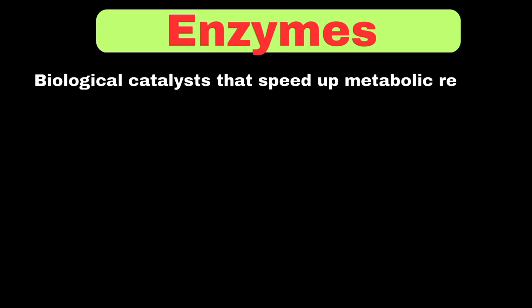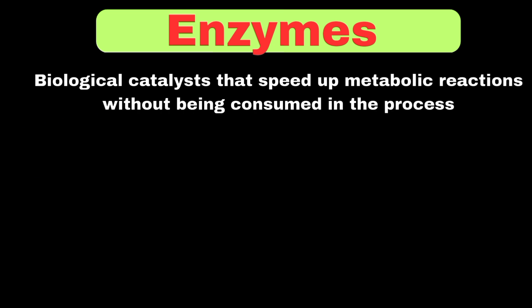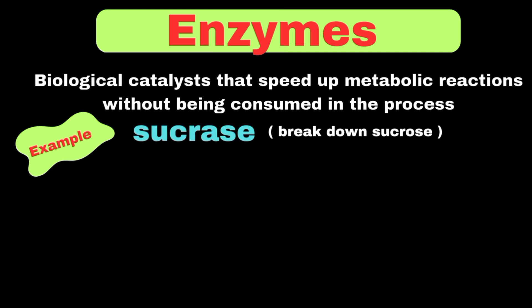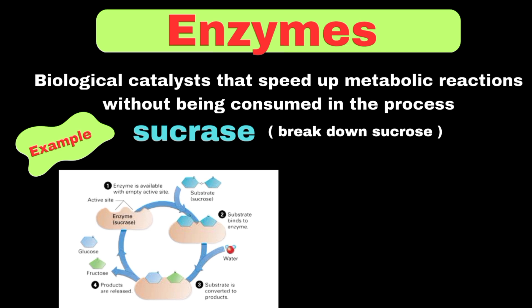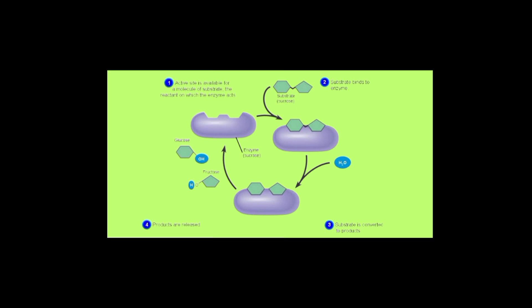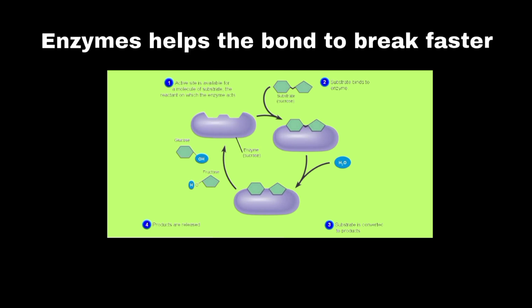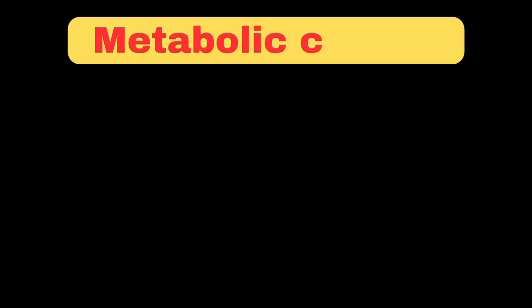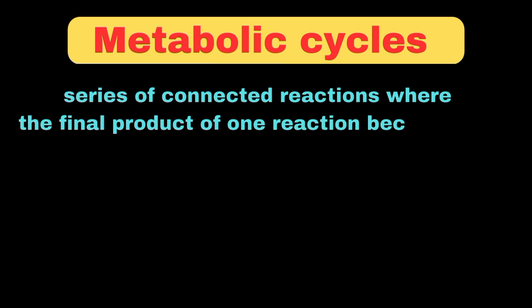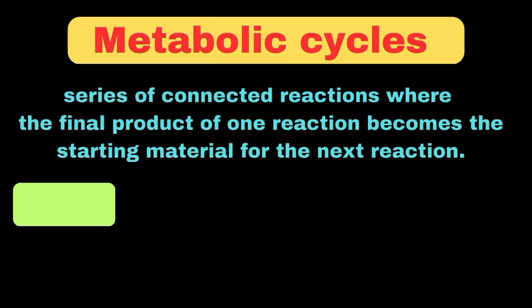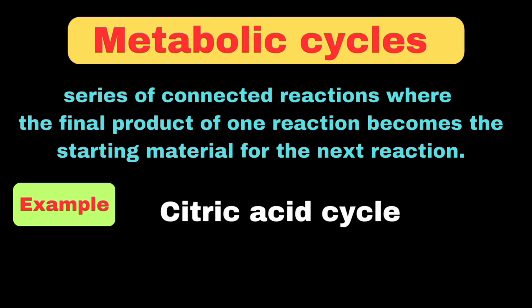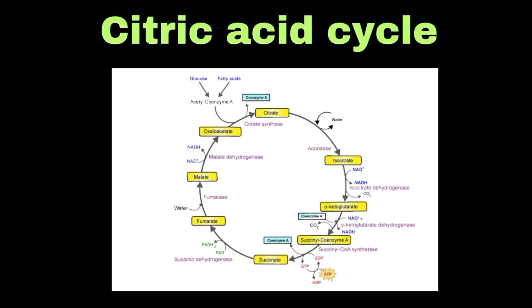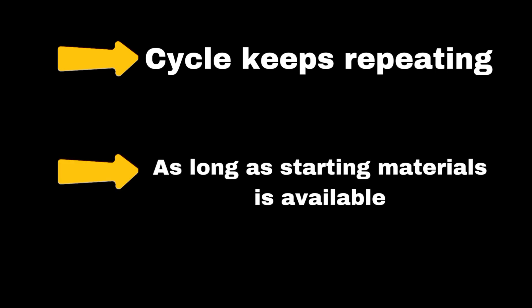Enzymes are biological catalysts that speed up metabolic reactions without being consumed in the process. For example, the enzyme sucrase has an active site where sucrose fits perfectly like a key in a lock, and helps break the bond between glucose and fructose much faster than would happen without the enzyme. A metabolic cycle is a series of connected reactions where the final product of one reaction becomes the starting material for the next. In the citric acid cycle, a 2-carbon acetyl group combines with a 4-carbon oxaloacetate to form 6-carbon citric acid. Through a series of reactions, the citric acid loses 2 carbon atoms as CO2 and is converted back to oxaloacetate, ready to start the cycle again.